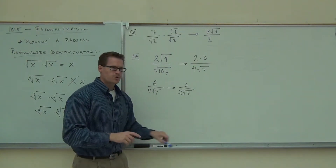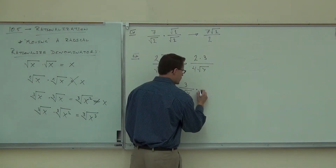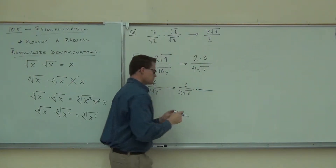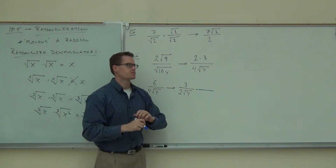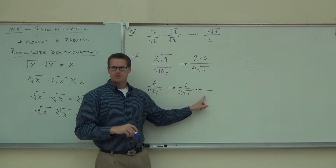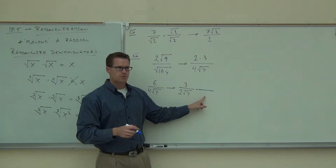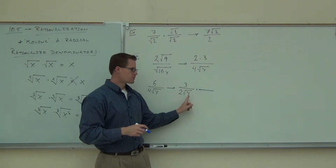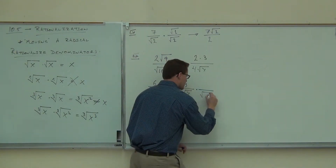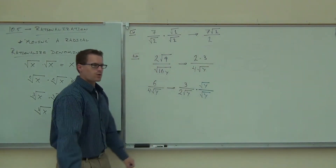So when I multiply — which I know I'm going to have to do, because multiplication is the only way that you get rid of the square root, at least in one spot of this fraction — when I multiply, do I want to multiply by another 2 here? No, I really don't care about the 2. What I care about is the square root of y. What am I going to multiply by then? The root of y. That would work.